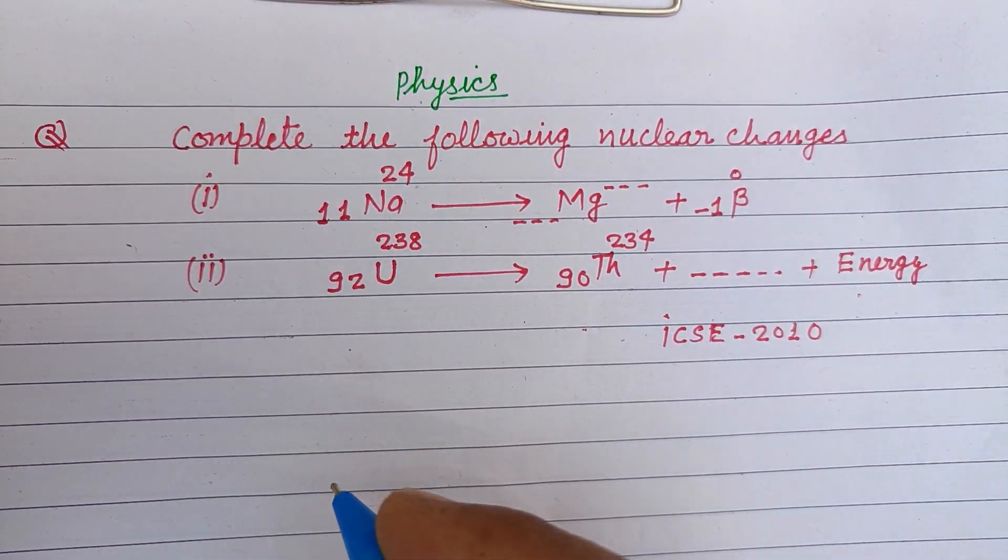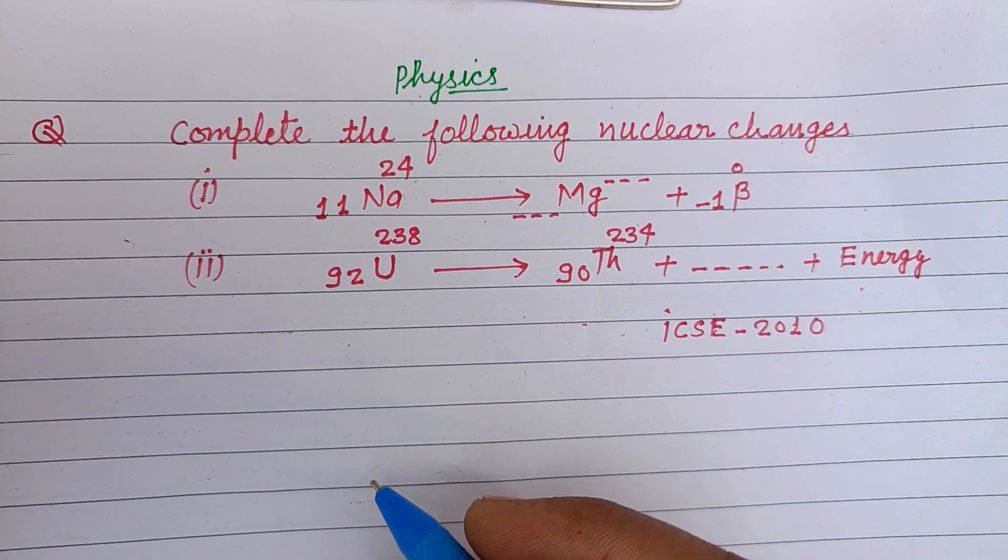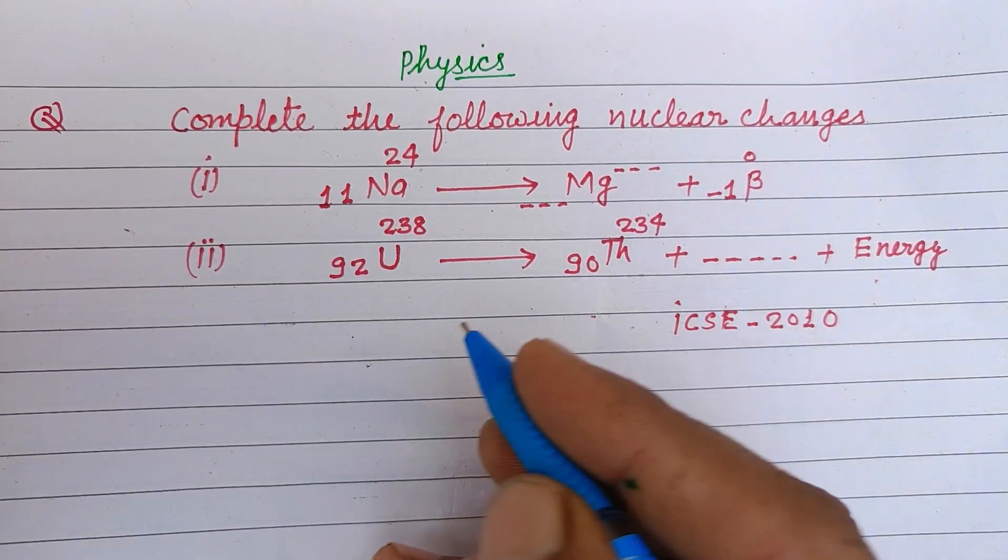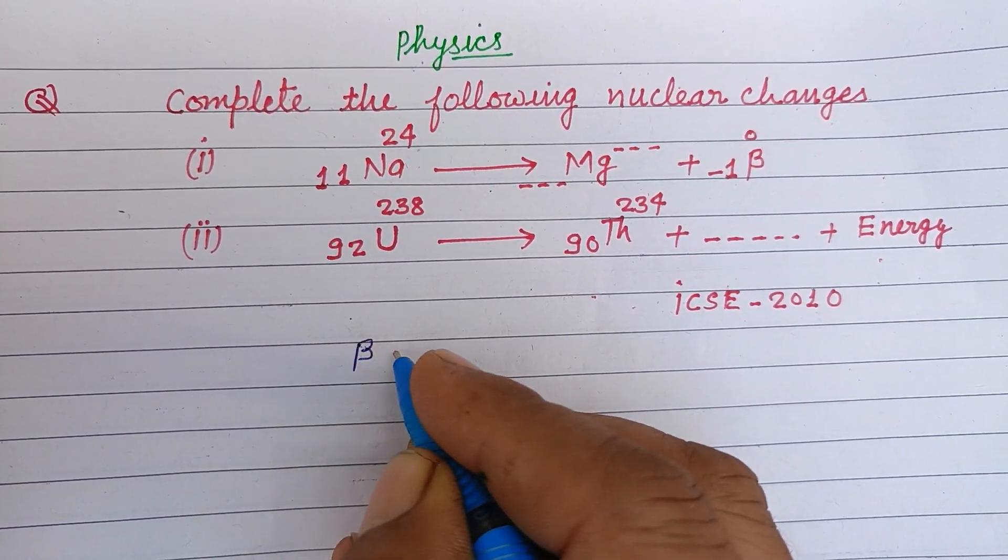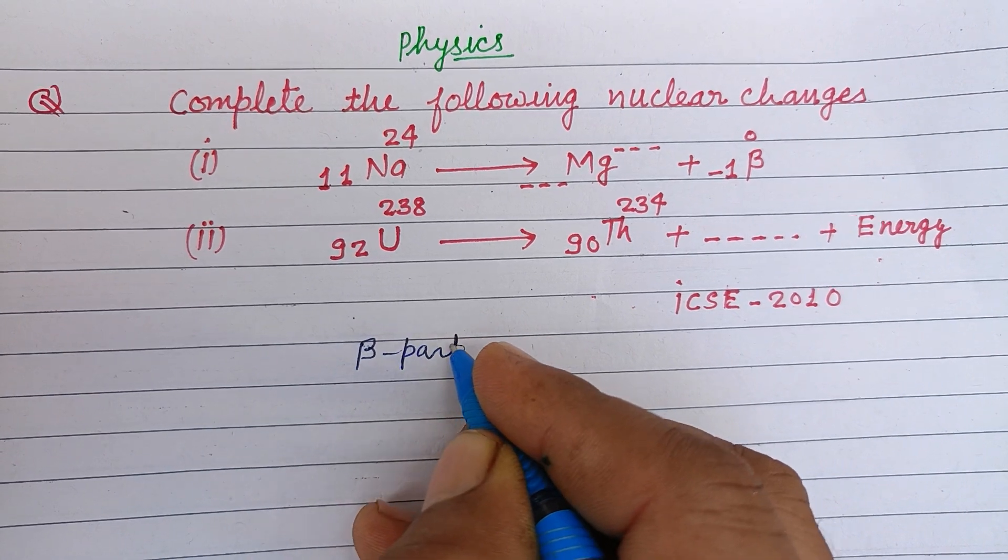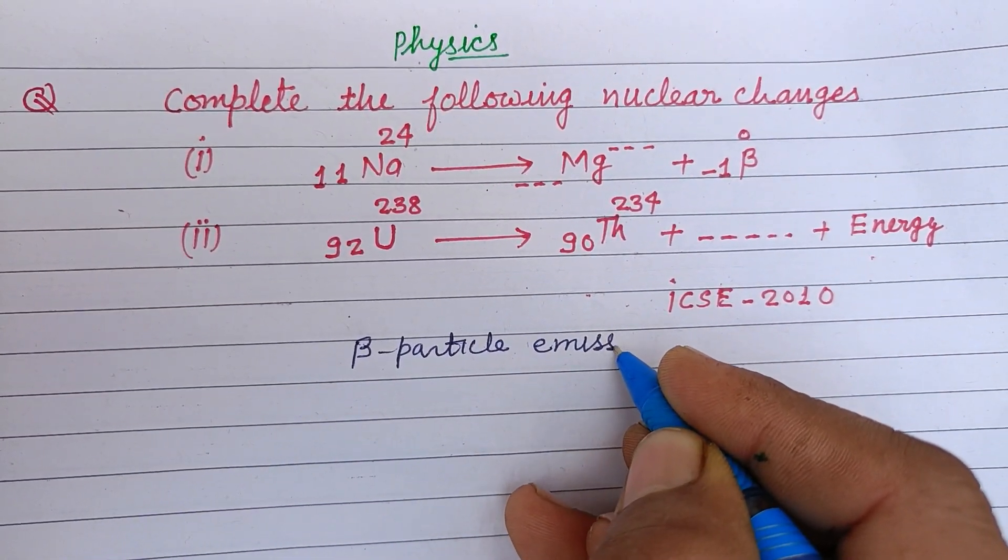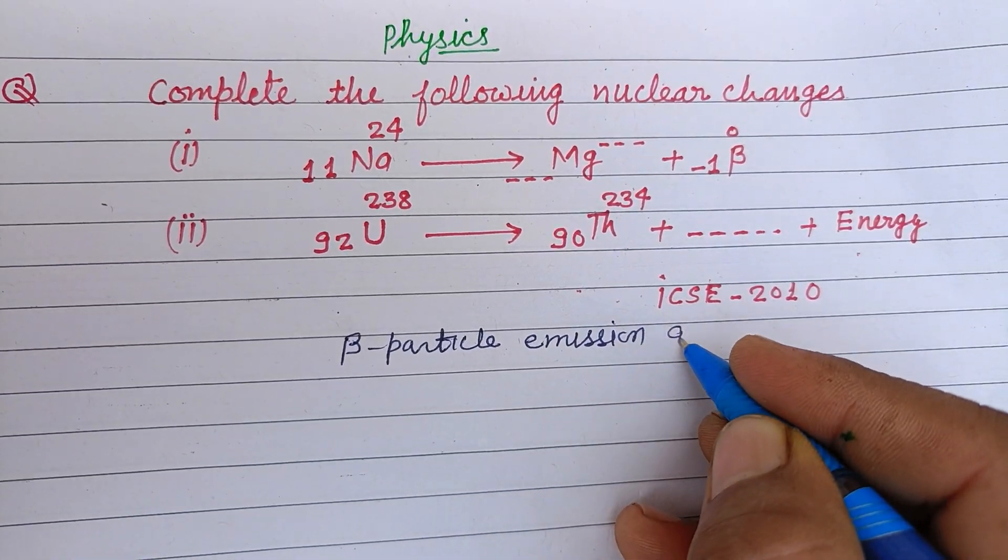You know that when one beta particle is emitted, beta particle emission gives rise to